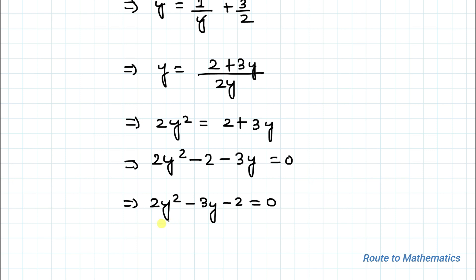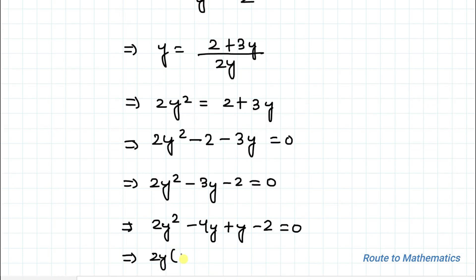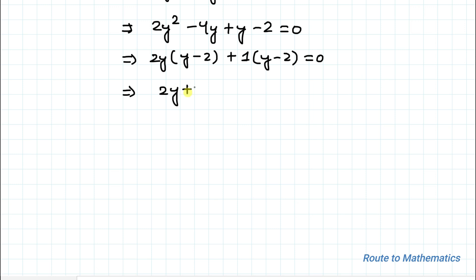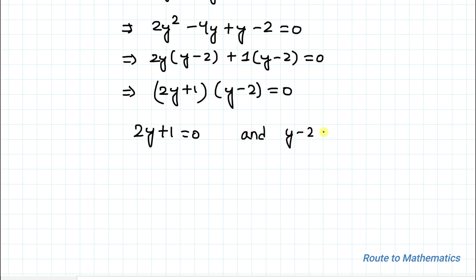In order to find the value of y, we need to factorize it using the middle term splitting method. We have 2y squared minus 4y plus y minus 2 equals to 0. Taking 2y common, we have (y minus 2) plus 1 common, giving (2y plus 1)(y minus 2) equals to 0. So y equals to minus 1 by 2 or y equals to 2.